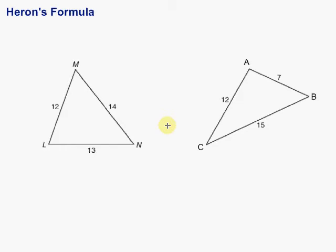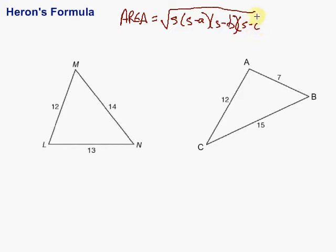Let's take a look at what the formula looks like first. In the formula we have the area is equal to the square root of s times (s minus a) times (s minus b) times (s minus c).